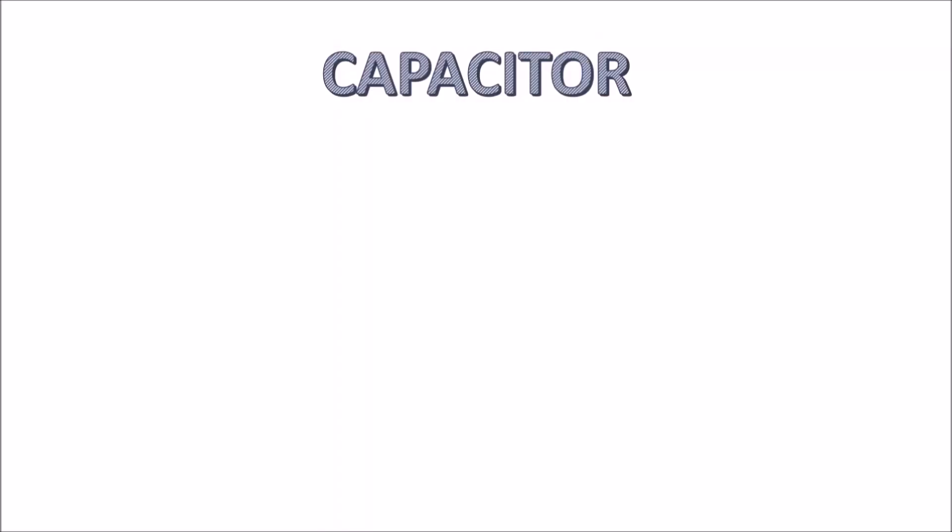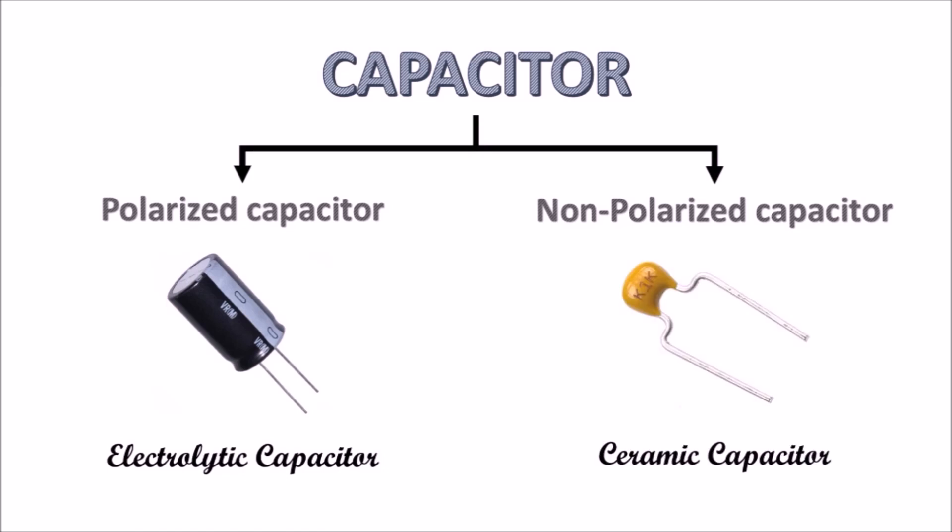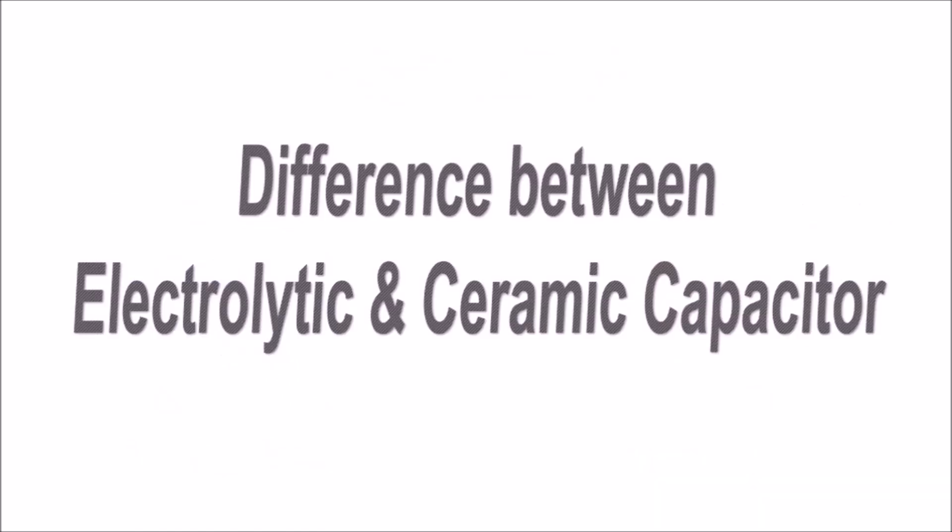There are two types of capacitors: polarized and non-polarized. As the name suggests, polarized capacitors have polarity while non-polarized capacitors have no polarity. The most common polarized capacitor is the electrolytic capacitor, and the most common non-polarized capacitor is the ceramic capacitor. Now let's start with the difference between electrolytic and ceramic capacitors.